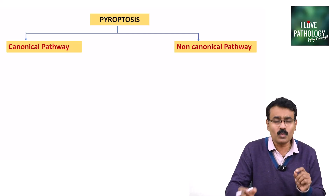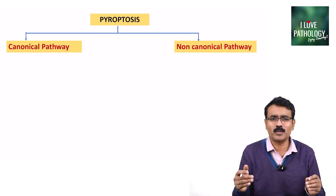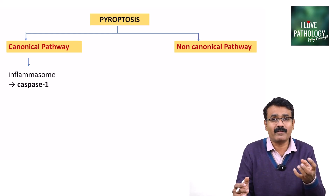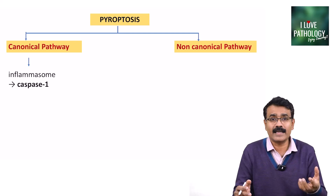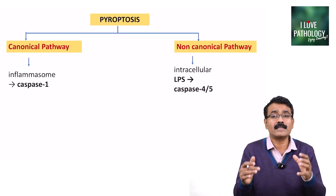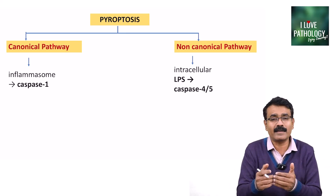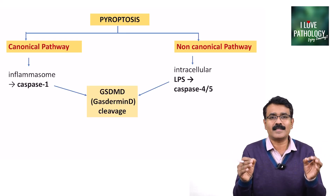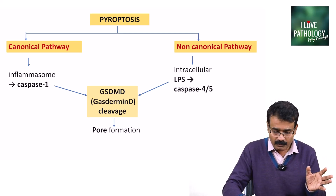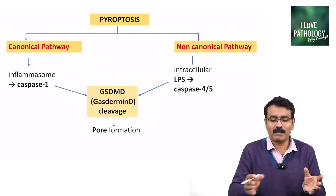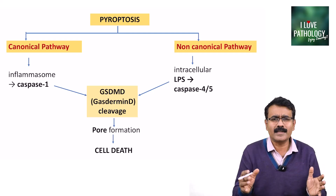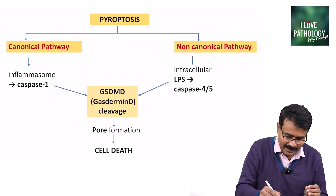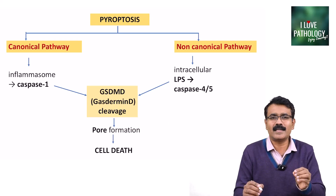Pyroptosis is activated by two important pathways: the canonical pathway and the non-canonical pathway. The canonical pathway involves inflammasome formation activating caspase-1, whereas the non-canonical pathway involves intracellular lipopolysaccharide activating caspase-4 and caspase-5. Both pathways converge to activate gasdermin D (GSDMD) cleavage, resulting in pore formation in the cell membrane, which causes the cell to die.